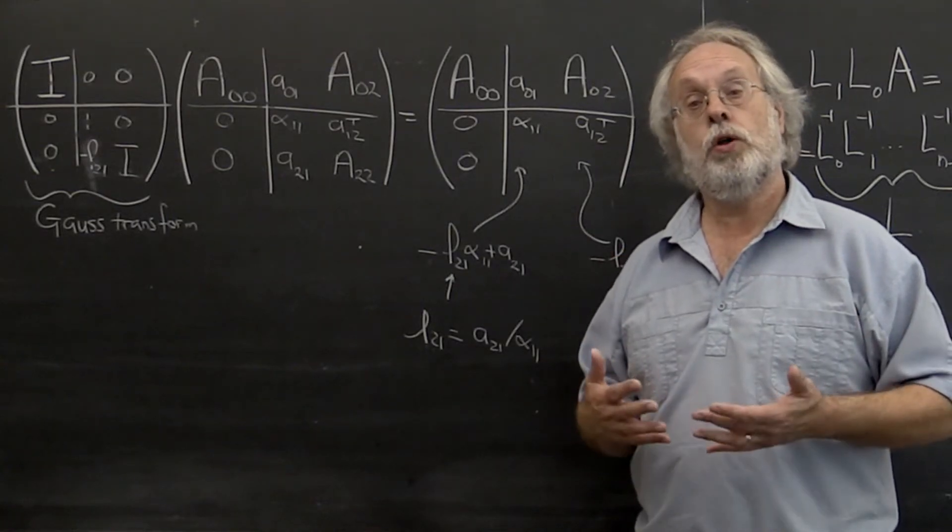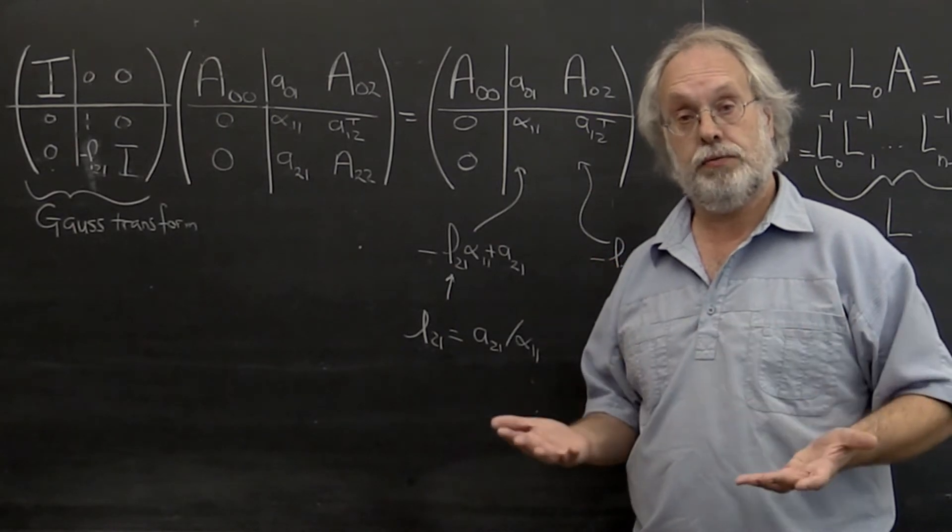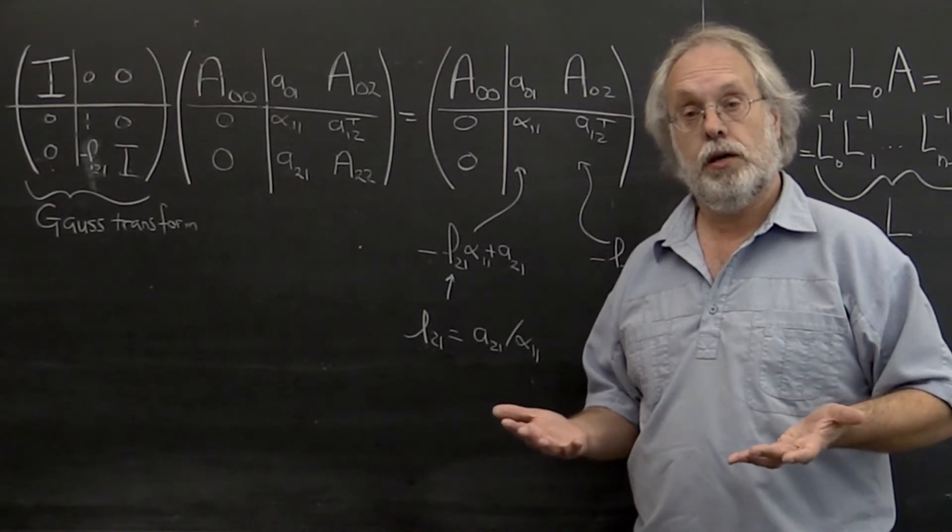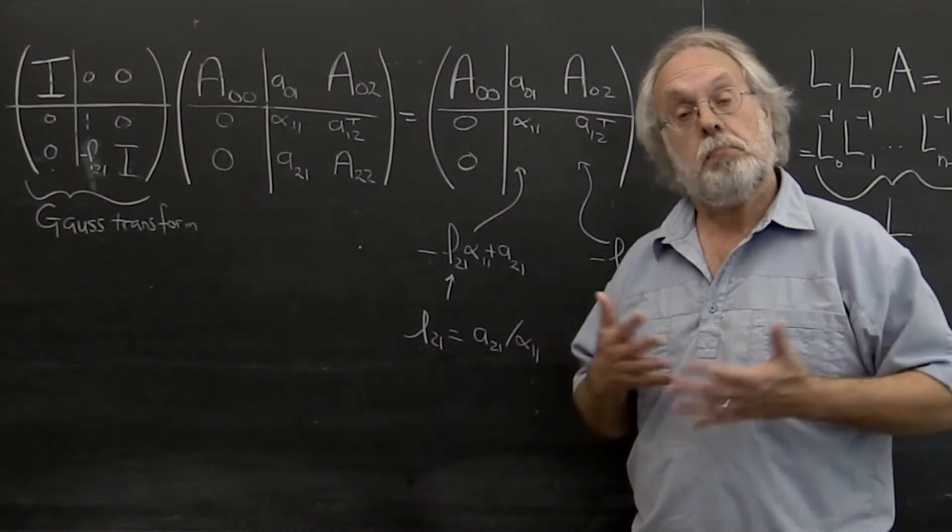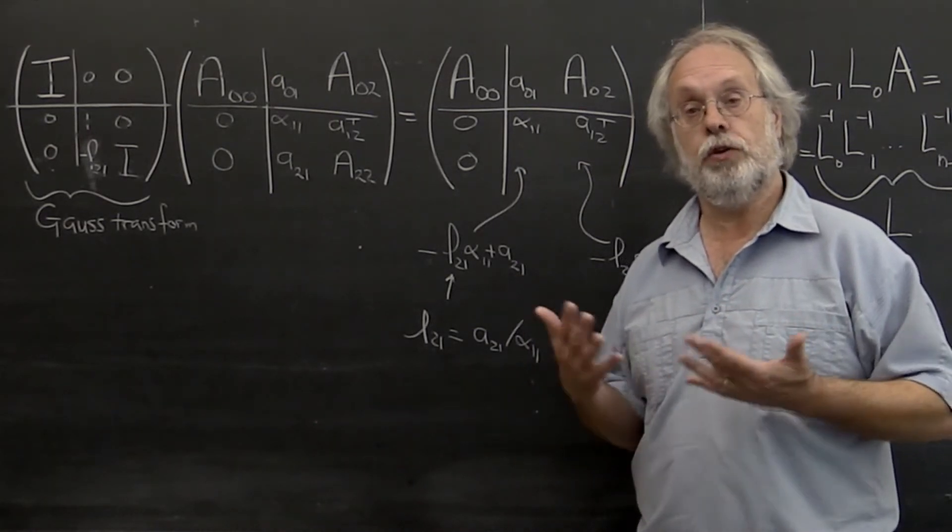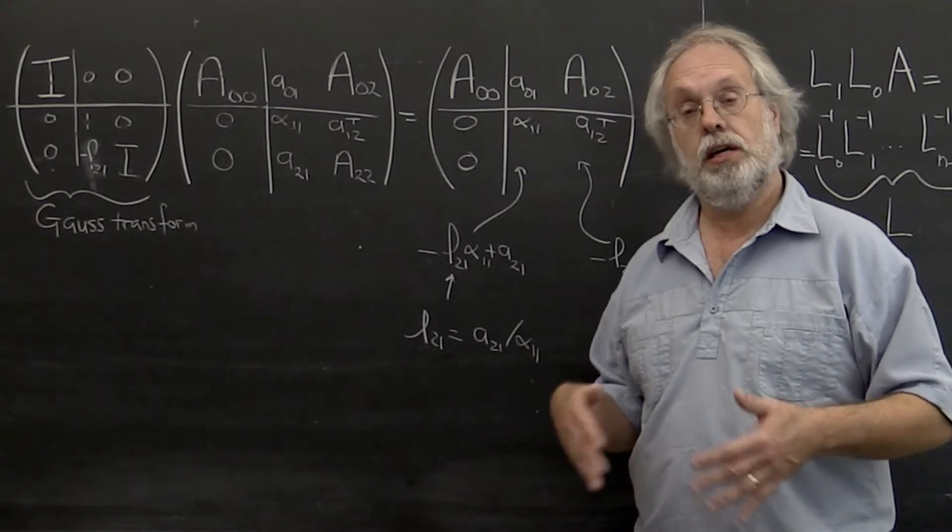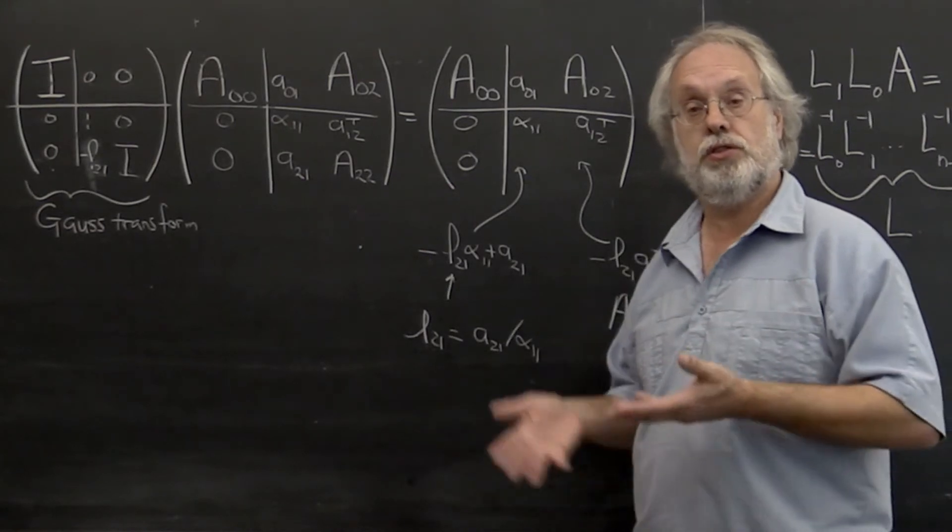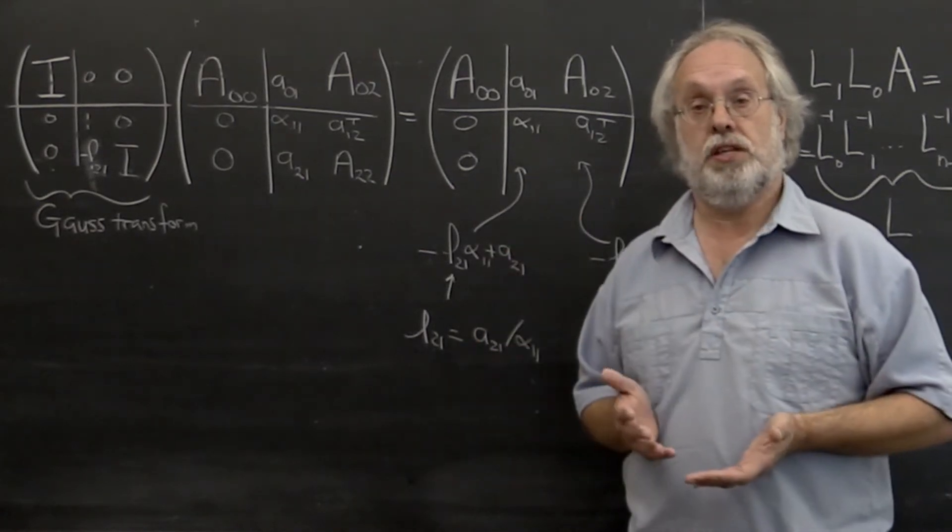The last section was all about computing the LU factorization of a matrix where somehow things worked out. We came up with conditions under which the LU factorization existed and we showed that under those conditions the LU factorization completes.